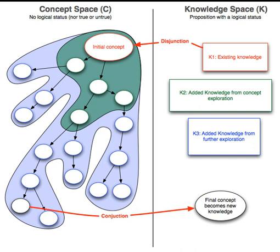Building on these premises, CK theory shows the design process as the result of four operators: CK, KC, CC, and KK. The initial concept is partitioned using propositions from K (KC). These partitions add new properties to the concepts and create new concepts (CC), thanks to a conjunction (CK). This expansion of C may in return provoke the expansion of the K-space (KK). The process can be synthesized through a design square. One design solution for a first concept C0 will be a path in the C-space that forms a new proposition in K. There may exist several design paths for the same C0.